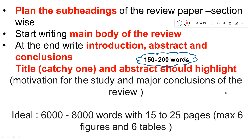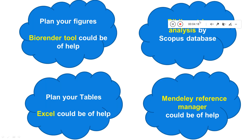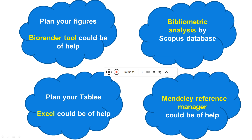For making figures you can use the BioRender tool — I've already made a video on that if you want more details. If you do a bibliometric analysis in your review paper it will be very useful; I've also made a video on how to do a bibliometric analysis using the Scopus database. For tables, you can use Excel as it will help orient and format things properly. For managing references, since review papers have multiple references, I recommend using a reference management tool like Mendeley — the desktop version is available and is very useful.